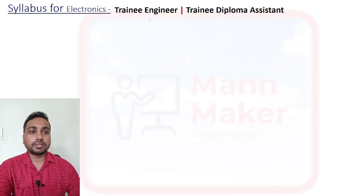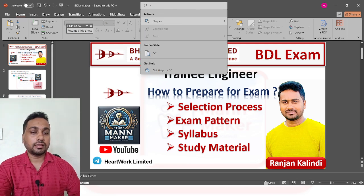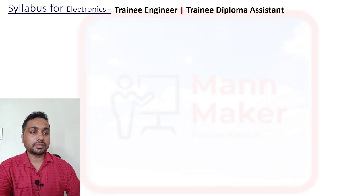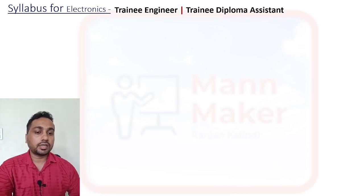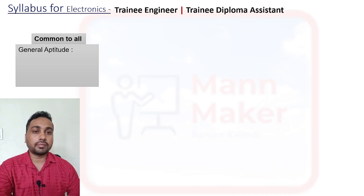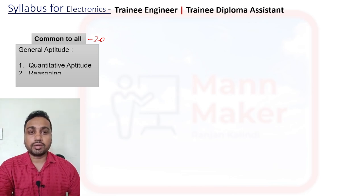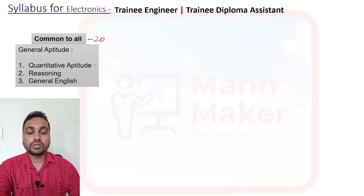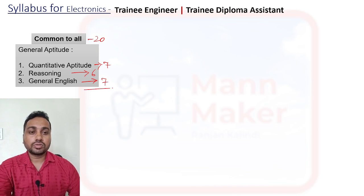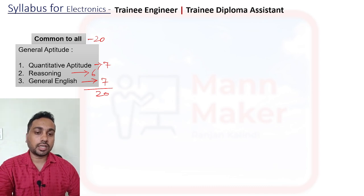Now we will talk about the syllabus for the trainee engineer. One section is common to all branches — you will get 20 questions from general aptitude, which includes quantitative aptitude, reasoning, and general English. In quantitative aptitude you will get 7 questions, in reasoning 6 questions, and in English 7 questions. So total 20 questions in general aptitude.